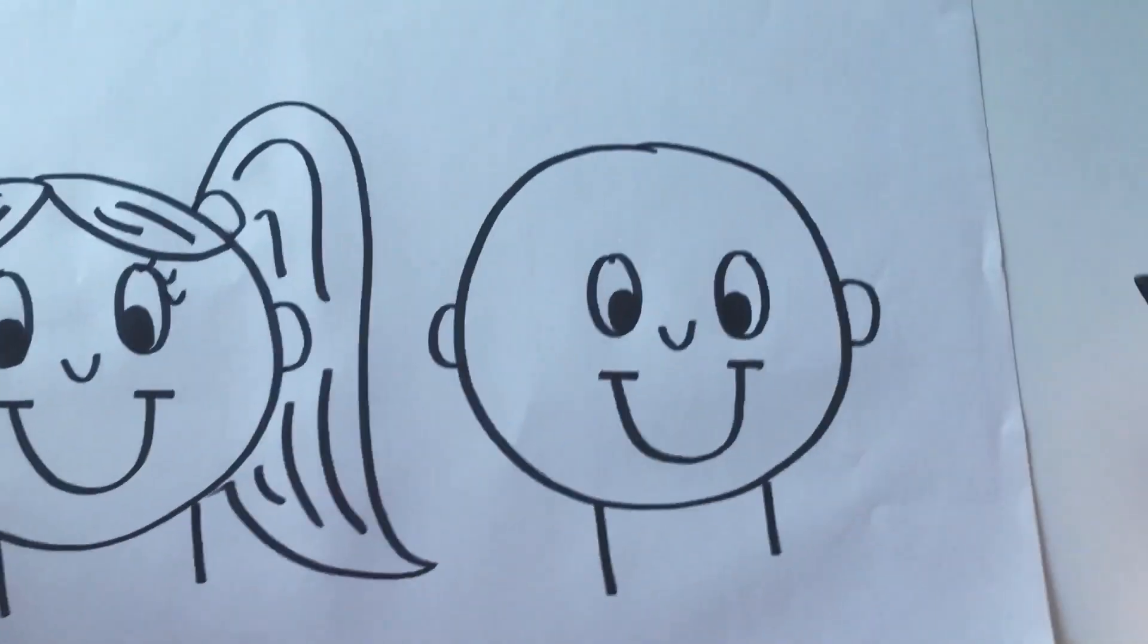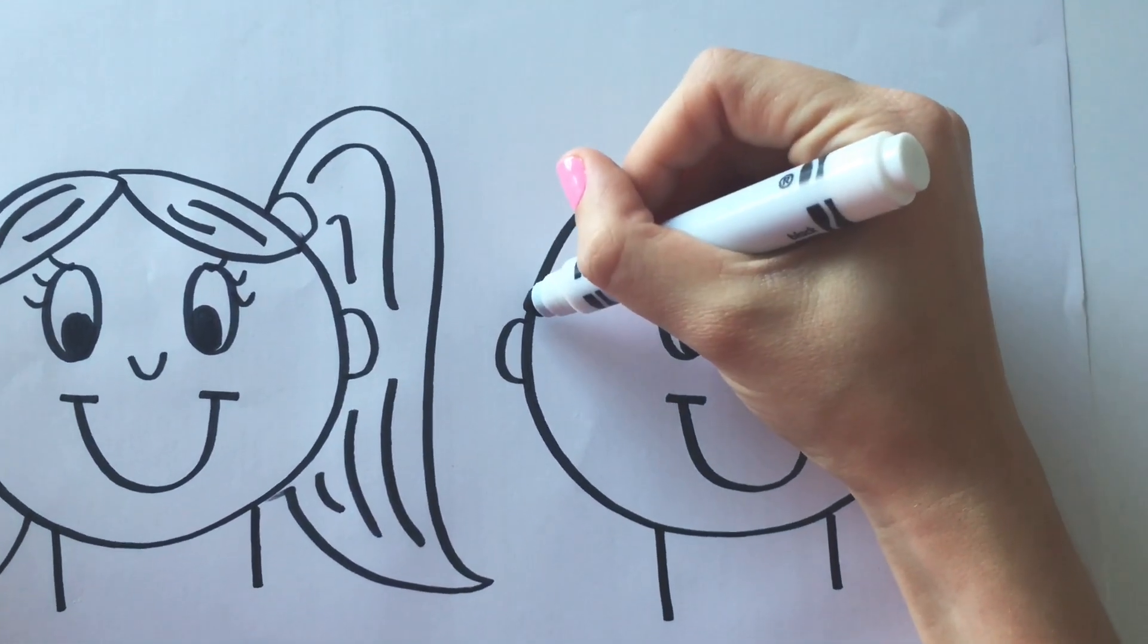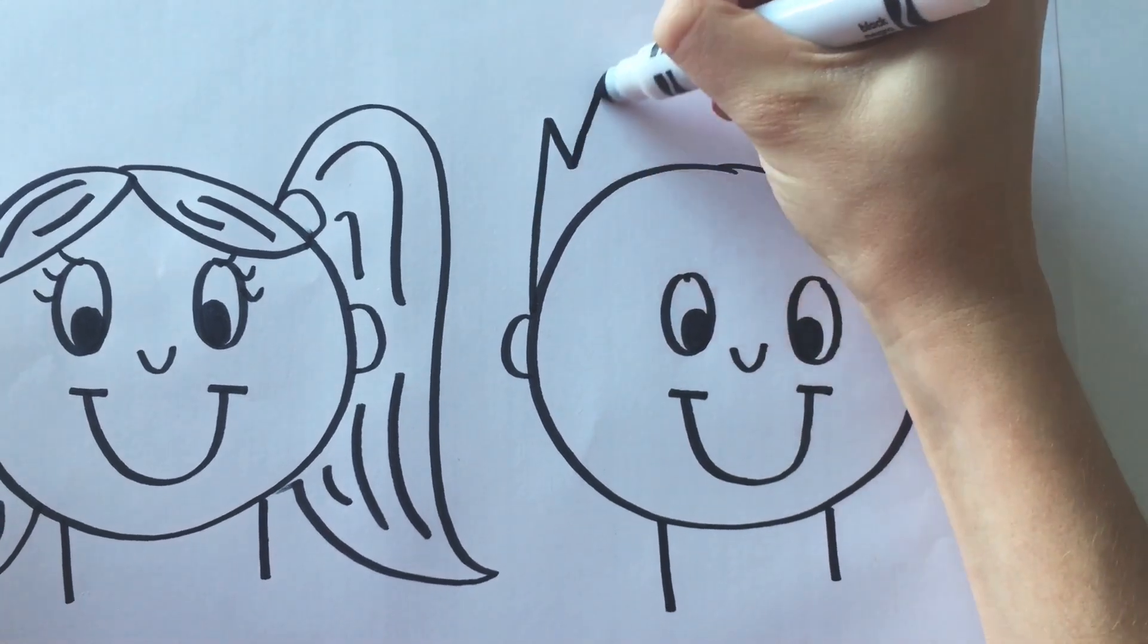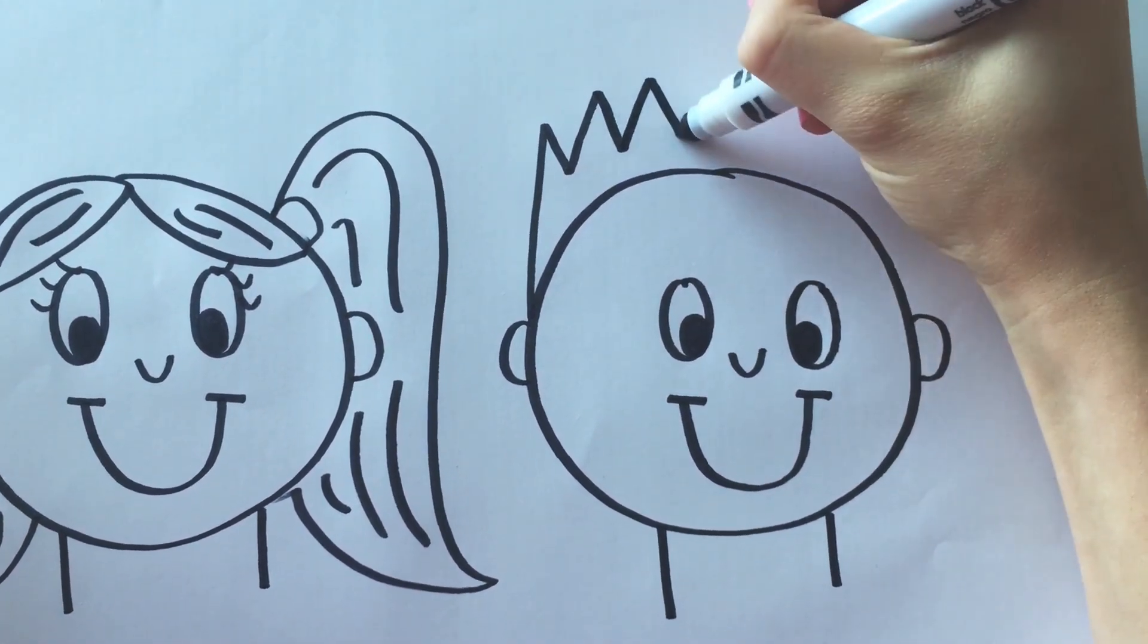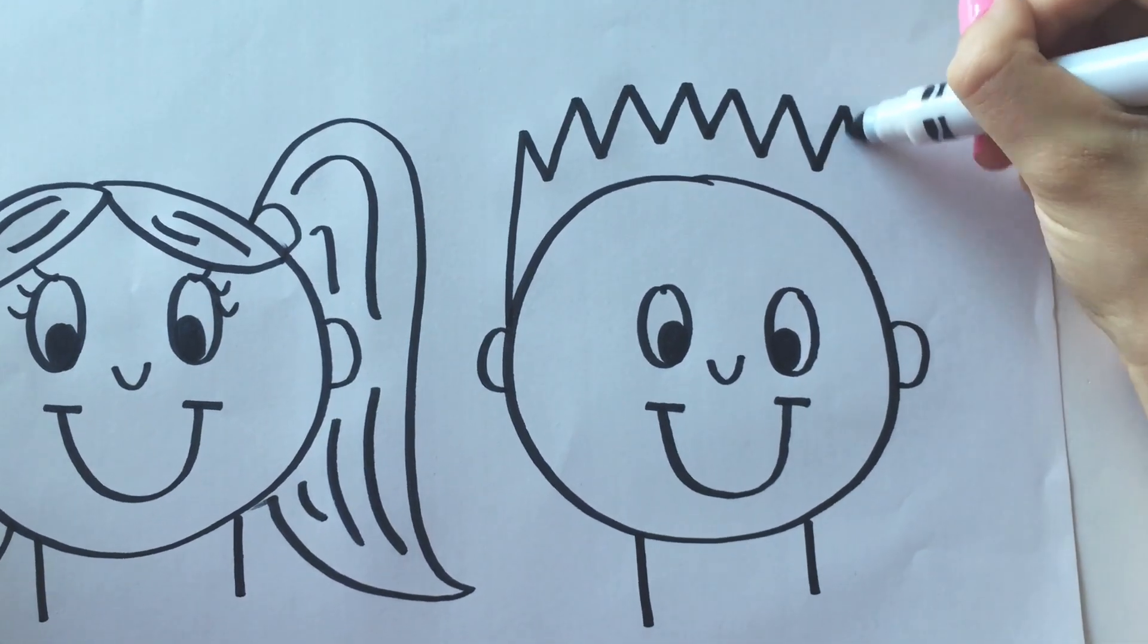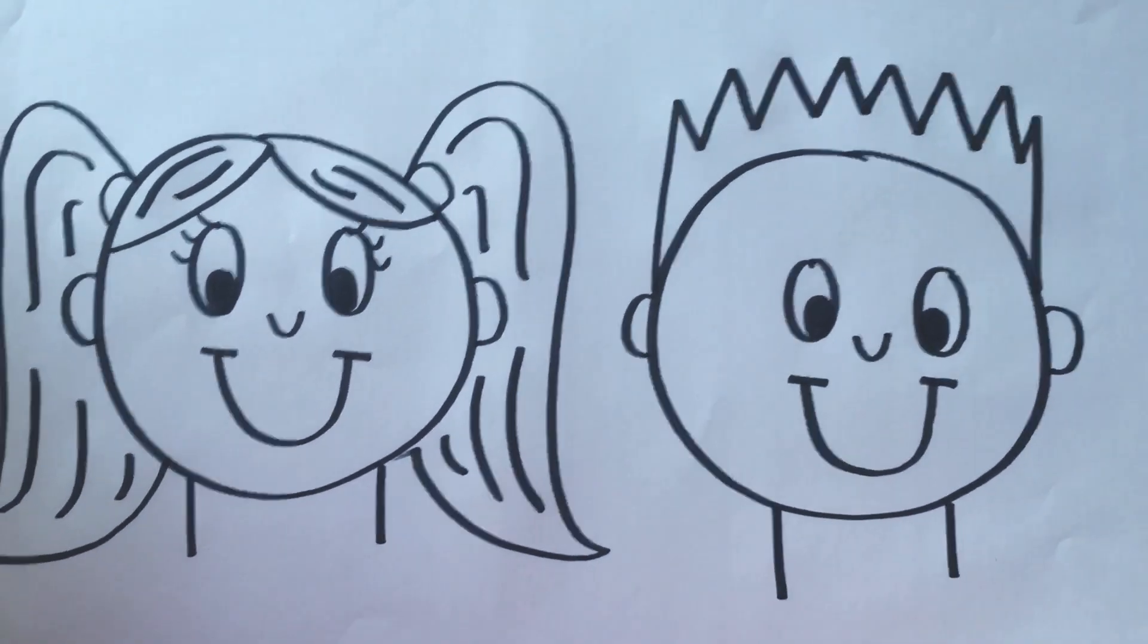And now on to the boy. You don't have to do too much. It's just adding on some super cool dude spiky hair. We just zigzag across the top of the head. And there you have your boy and girl.